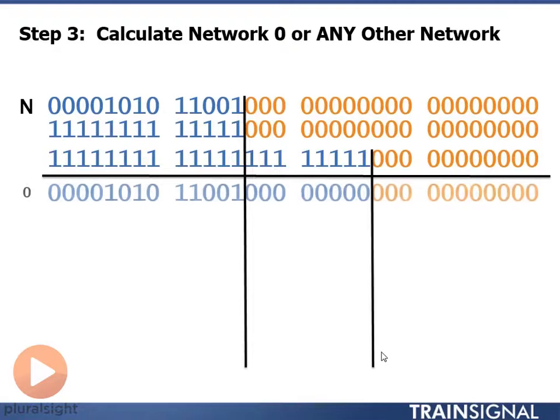We start with network zero. Network zero, we put all zeros in our borrowed bit section. Zeros in the host portion, and there's network number zero.